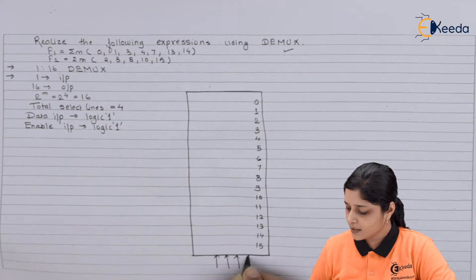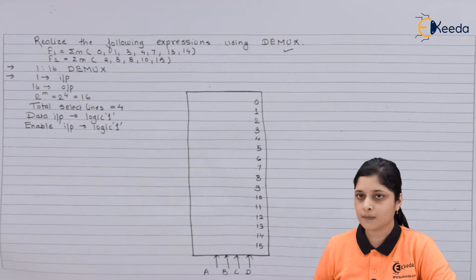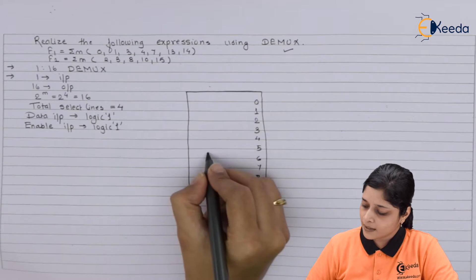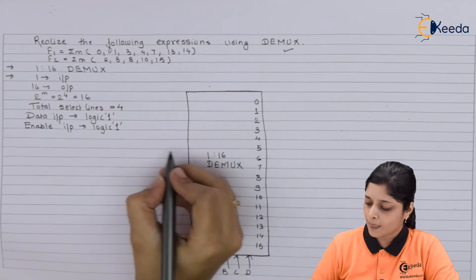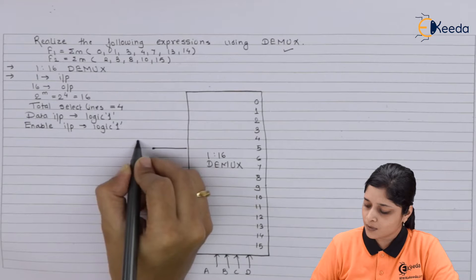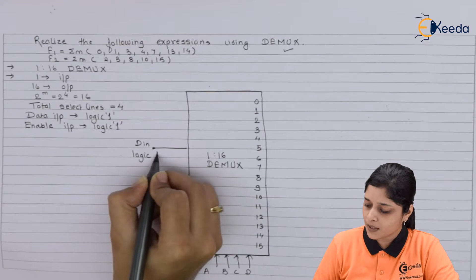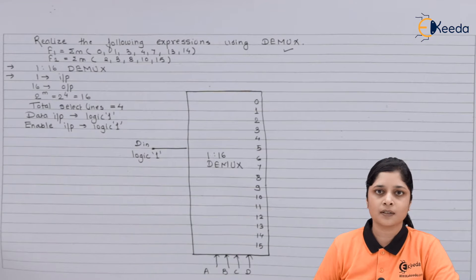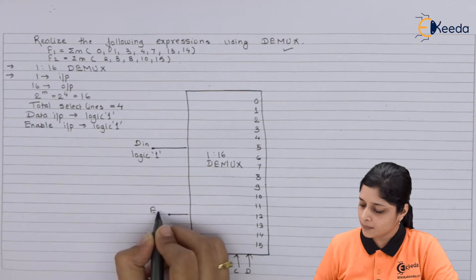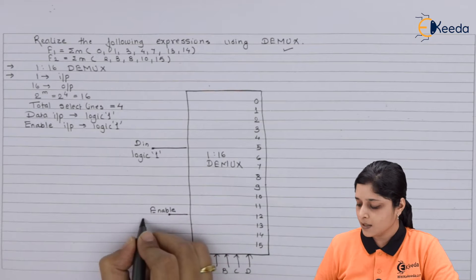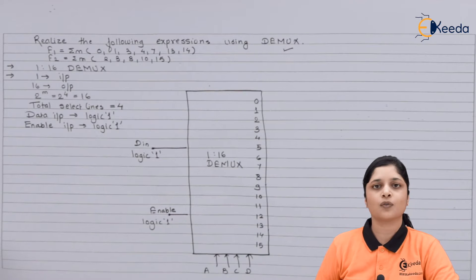After that it has four select lines A, B, C, D, and the name is 1 is to 16 DMUX. It has only one input data in, we have to always connect it to logic 1. Then it has enabled terminal E, it is also always connected to logic 1.